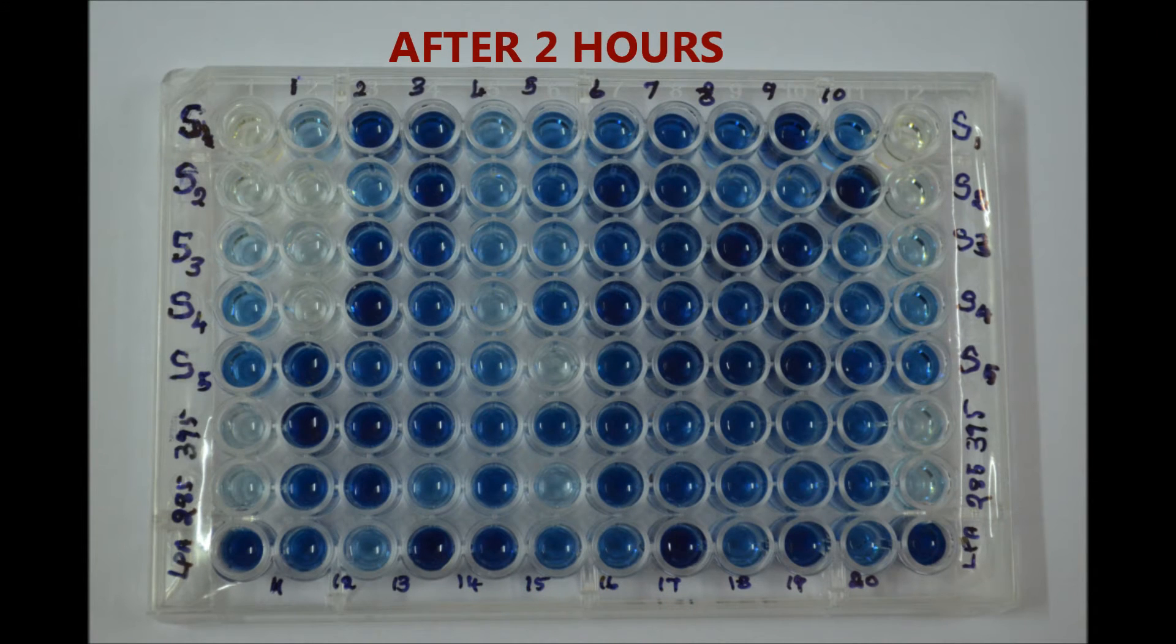a blue color phosphomolybdate complex forms in 1 to 2 hours. Dark blue color indicates the presence of high amounts of free phosphorus in the sample.